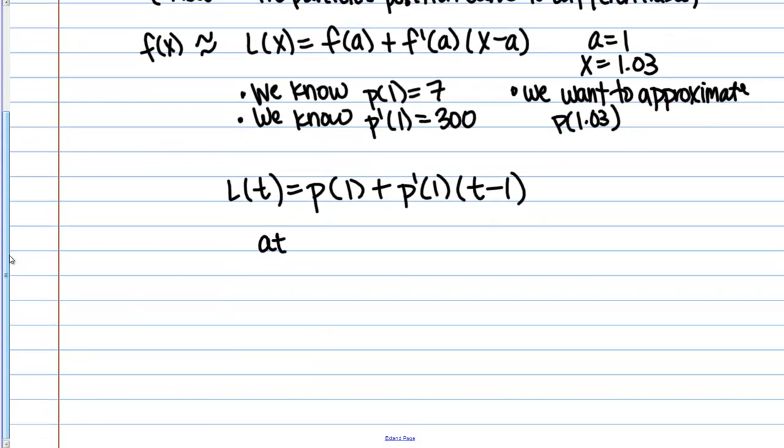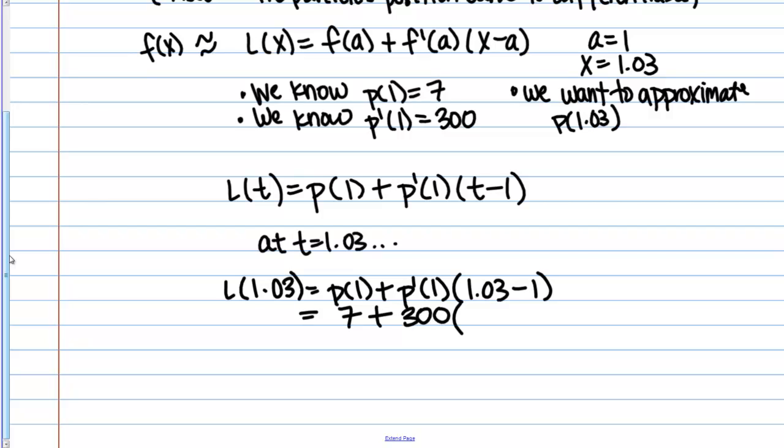And so we want to know at t equals 1.03. So then the linear approximation at time equals 1.03 is p of 1 plus p prime of 1 times 1.03 minus 1. So what's p of 1? Well that's 7. The position at time equals 1 is 7. p prime of 1 was 300. That was the velocity at time equals 1. And 1.03 minus 1 is simply .03.